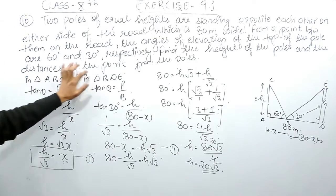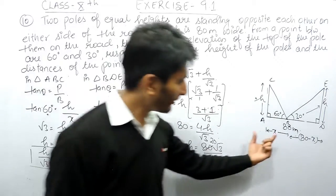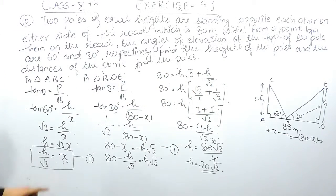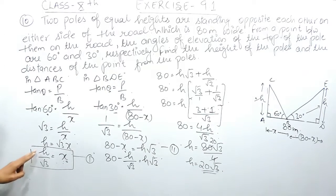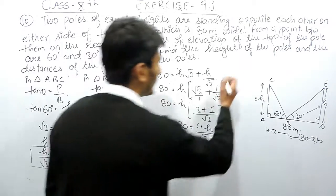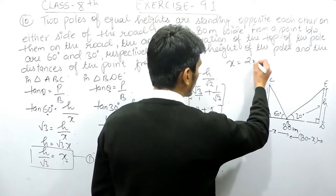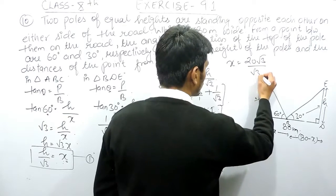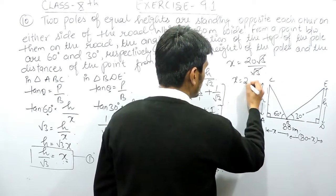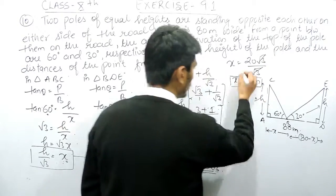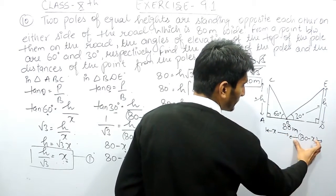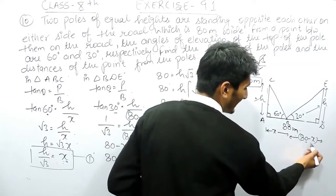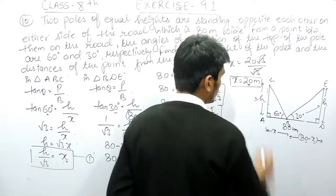Now, to find the distance of the point from each pole, we need to find X. Substituting H equals 20 root 3 into X equals H upon root 3: X equals 20 root 3 upon root 3. The root 3 cancels, so X equals 20 meters. The remaining distance is 80 minus 20 equals 60 meters.